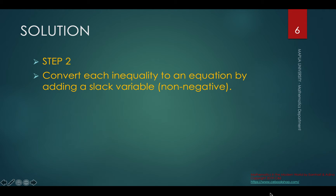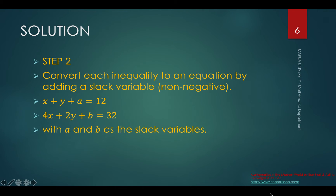We convert each inequality to an equation by adding a slack variable, which is considered to be non-negative. For the first inequality, x plus y is less than or equal to 12, so x plus y plus a equals 12. For the second inequality, 4x plus 2y, we add slack variable b to get 4x plus 2y plus b equals 32. So a and b are our slack variables.